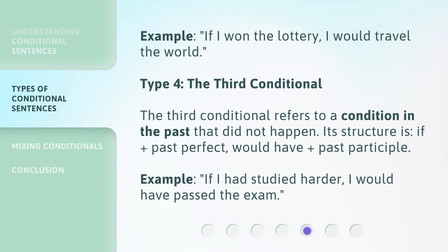Type 4: The Third Conditional. The Third Conditional refers to a condition in the past that did not happen. Its structure is: if plus past perfect, would have plus past participle. Example: If I had studied harder, I would have passed the exam.